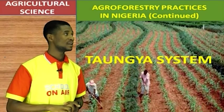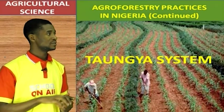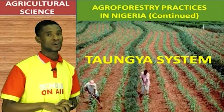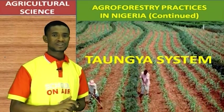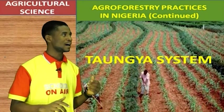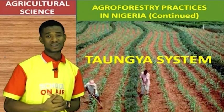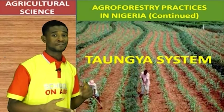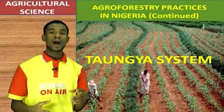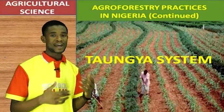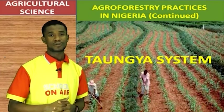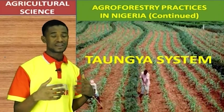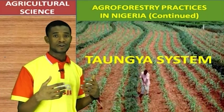The very specific thing we'll be talking about is the Taungya system. In our previous class, we talked about certain agroforestry practices like afforestation, deforestation, and regeneration, and I would like to do a brief recap on them. Afforestation is the practice of establishing a forest plantation.